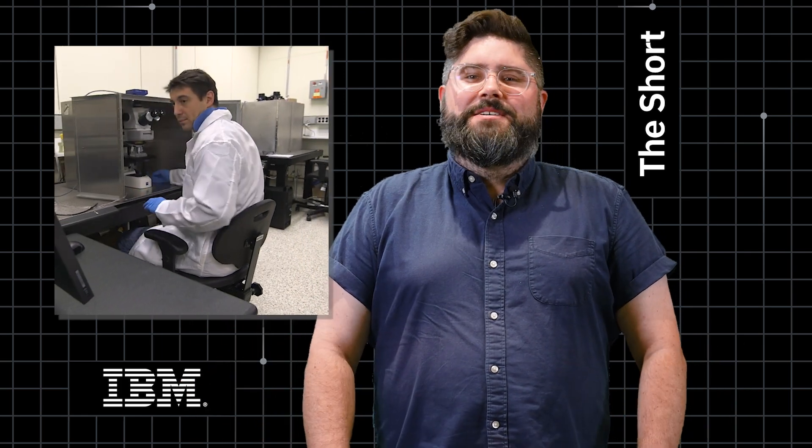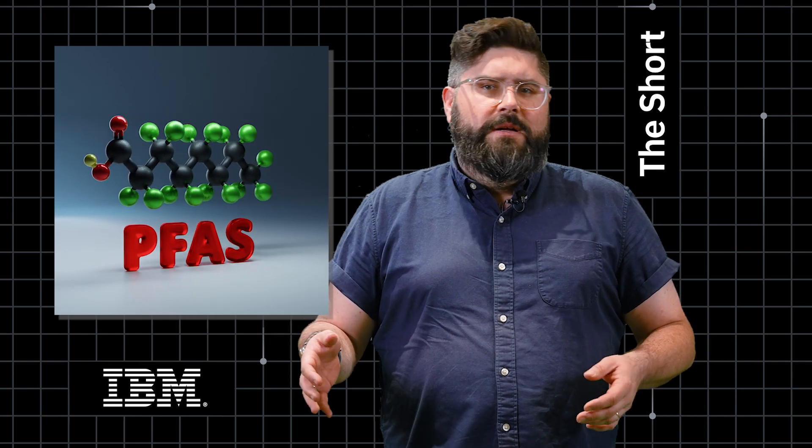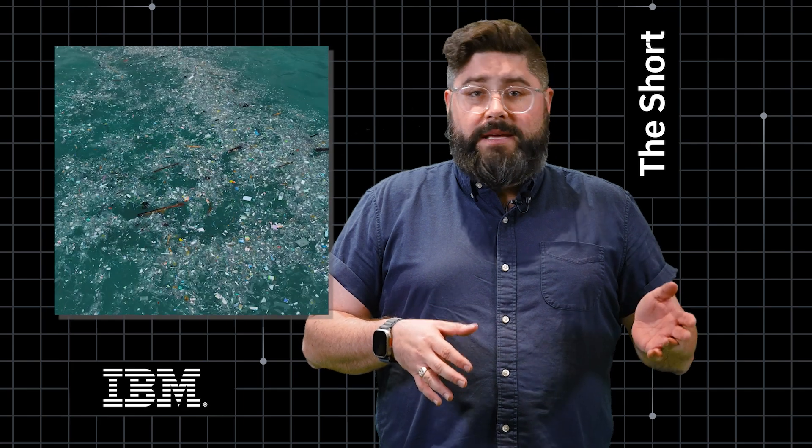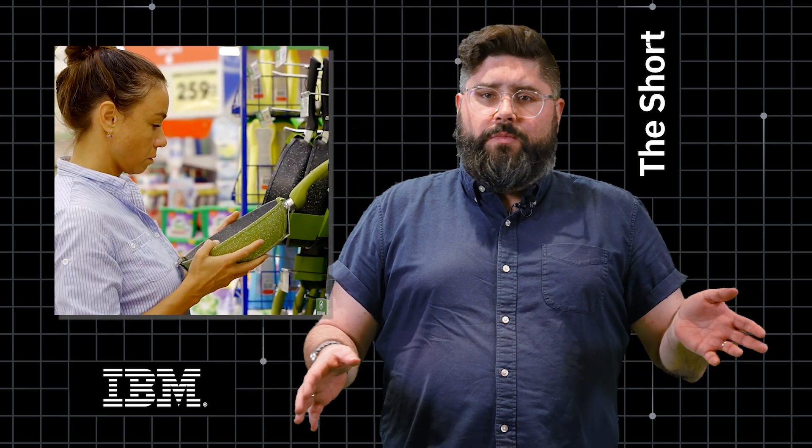We here at IBM Research have been considering how humanity impacts the world, particularly with plastics. You've probably heard of the terms PFAS or PFOAs or forever chemicals. These are materials that take thousands of years to break down naturally and are being found in our oceans and even in our bodies. We use them in cookware, packaging, and countless other products.